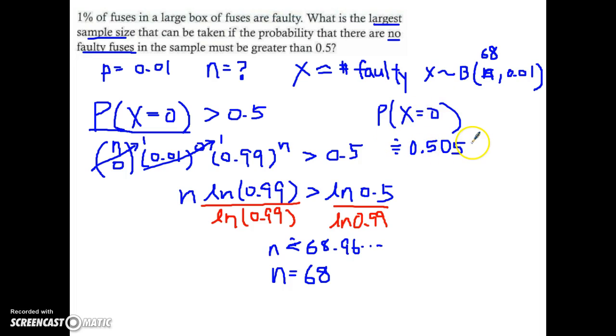Which means most likely I have a 50.5% chance for me not to get anything that's faulty, so which means in other words my factory will be open, they will not shut me down. However, if I provide them, if I give them 69.